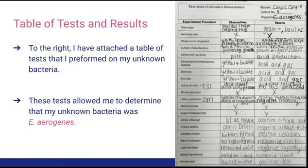On the right, you can see a list of every test that I performed on my microbe. Just a few of these tests that helped me identify which specific microbe I had: one would be a litmus milk test. This test had a change in the color of the broth to a pink appearance, indicating acid production.